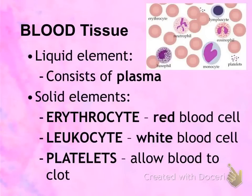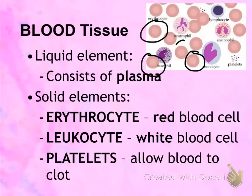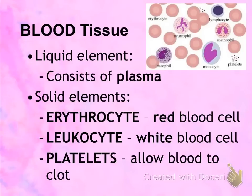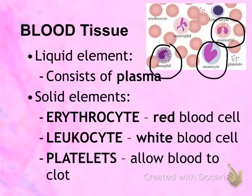The last tissue we're going to talk about is blood tissue, which is the only one that has a liquid ground substance called plasma. The solid materials inside blood tissue are erythrocytes, which are your red blood cells — the prefix erythro means red and the suffix cyte means cell, and that's where blood gets its color. The next type is leukocytes — leuko means white — and the five types of white blood cells are basophils, monocytes, eosinophils, lymphocytes, and neutrophils.